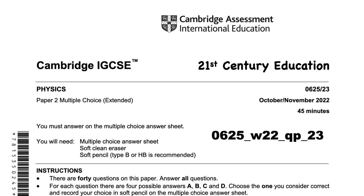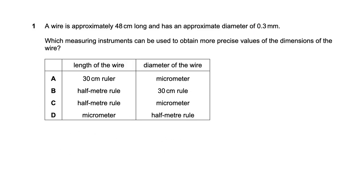Hello dear friends, let's solve the Winter 2022 IGCSE question paper, MCQ Component 23. For question one, we need to measure a wire of about 48 centimeters length and 0.3 millimeter diameter. We use a half-meter rule to measure the length and a micrometer to measure the diameter. So option C is the right answer.